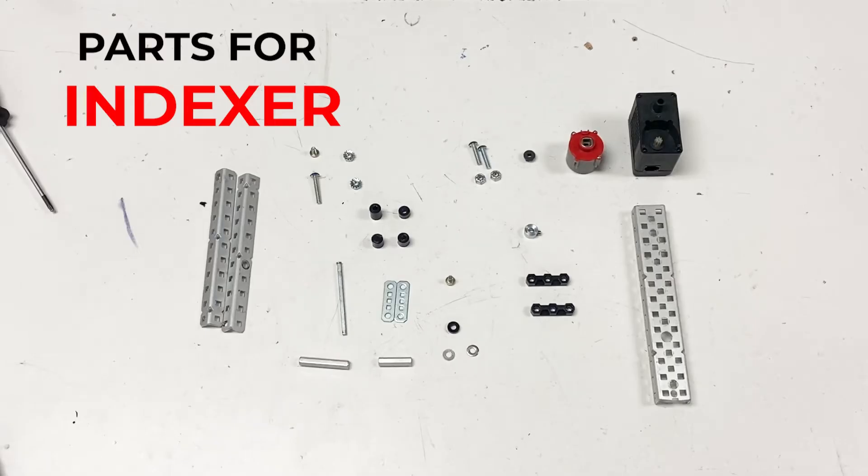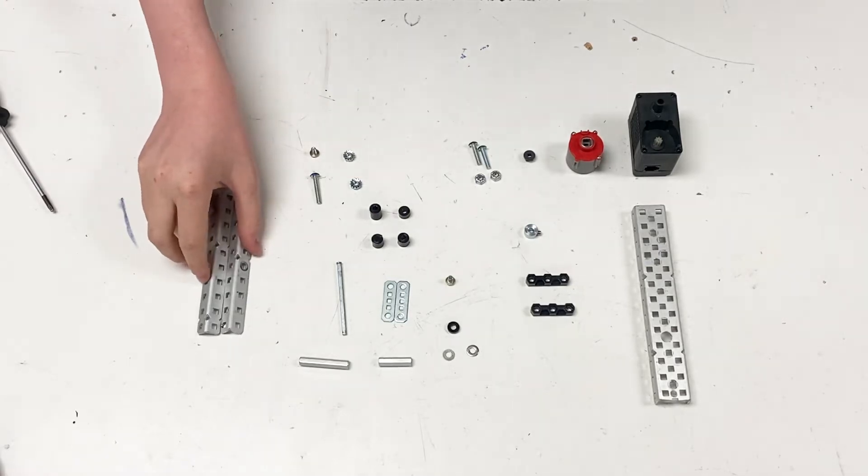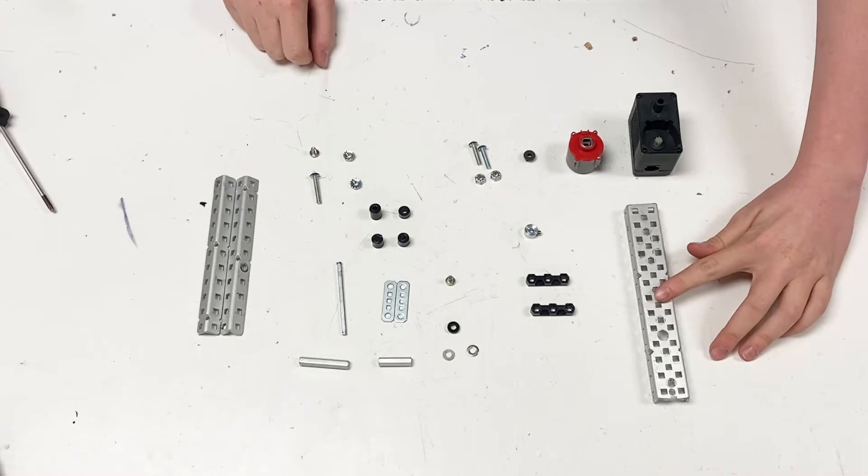When building the Indexer there are very specific parts that are needed, so we're going to use the two 11-hole 1x1s that we have, the 13-hole C-channel.